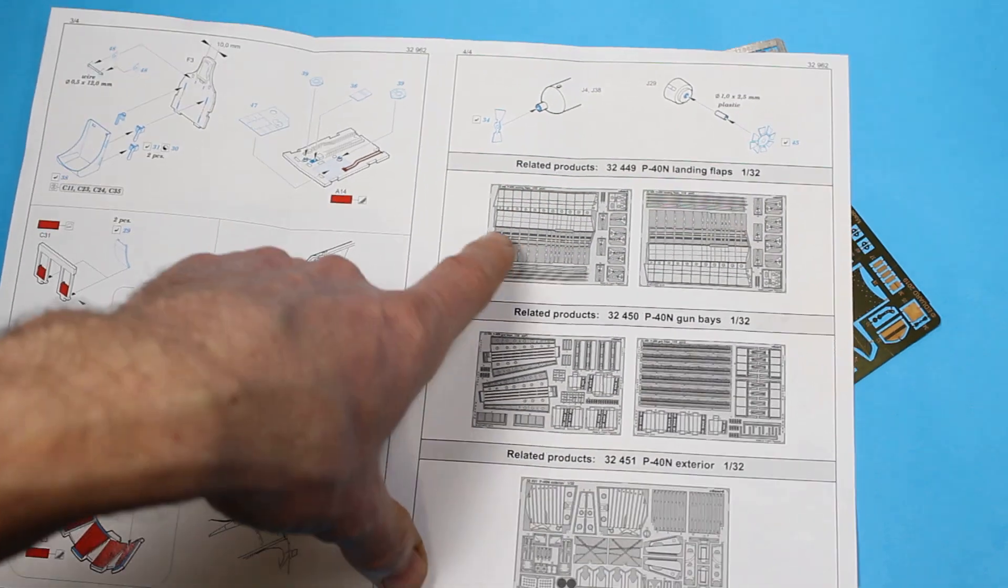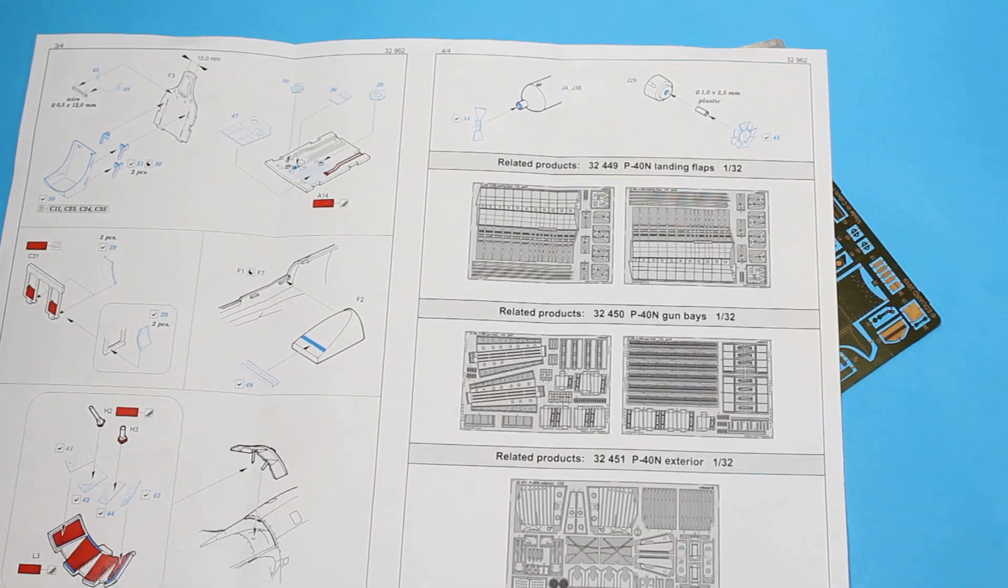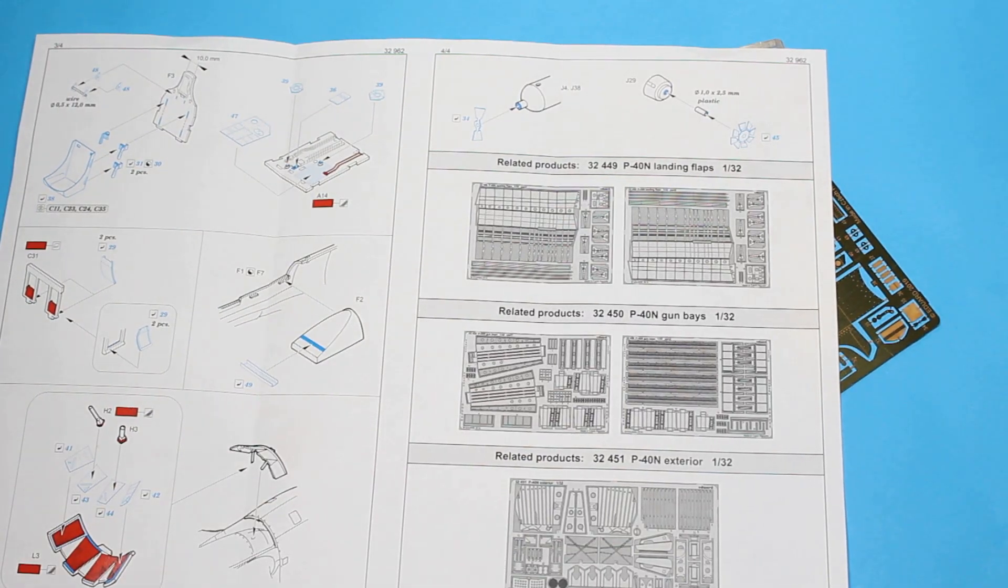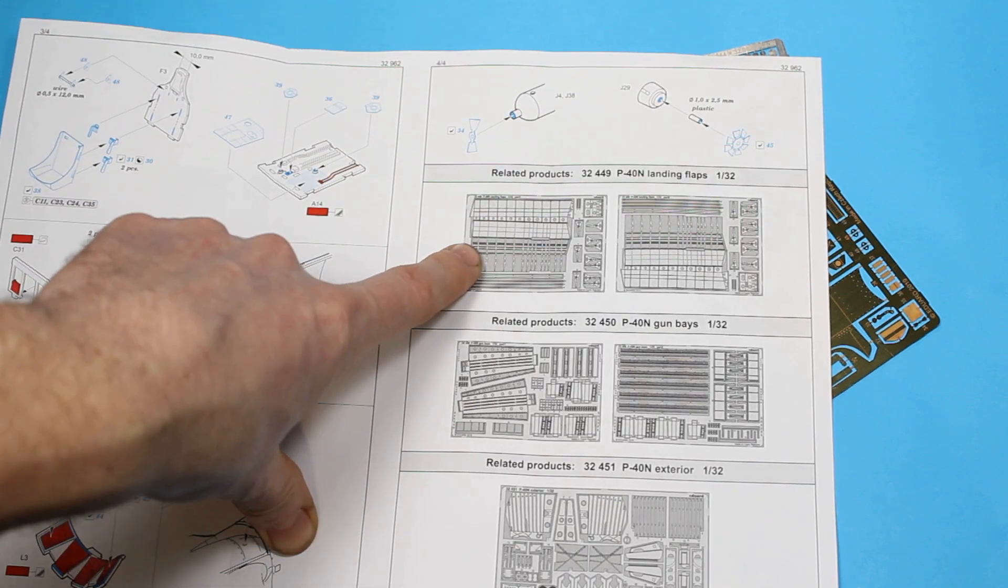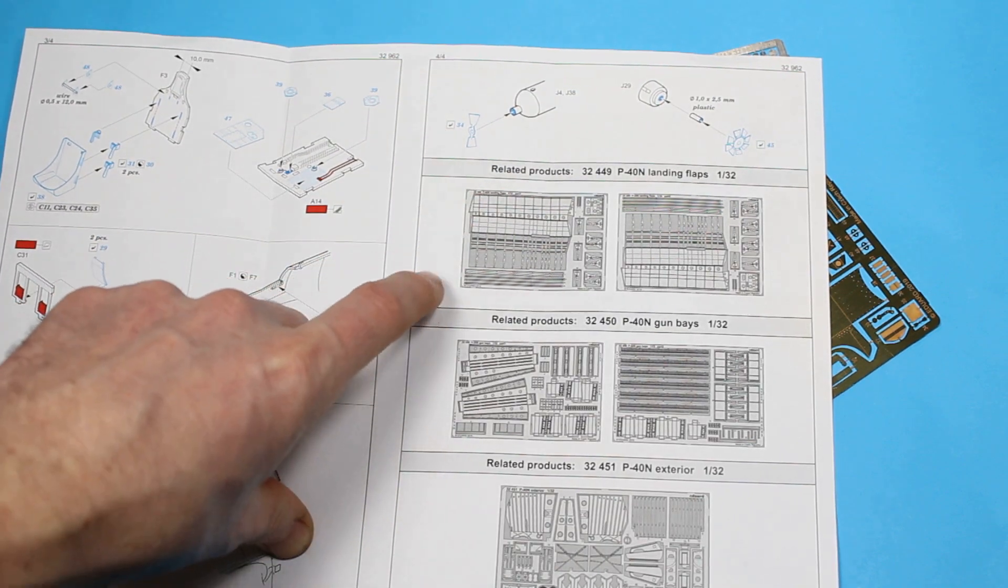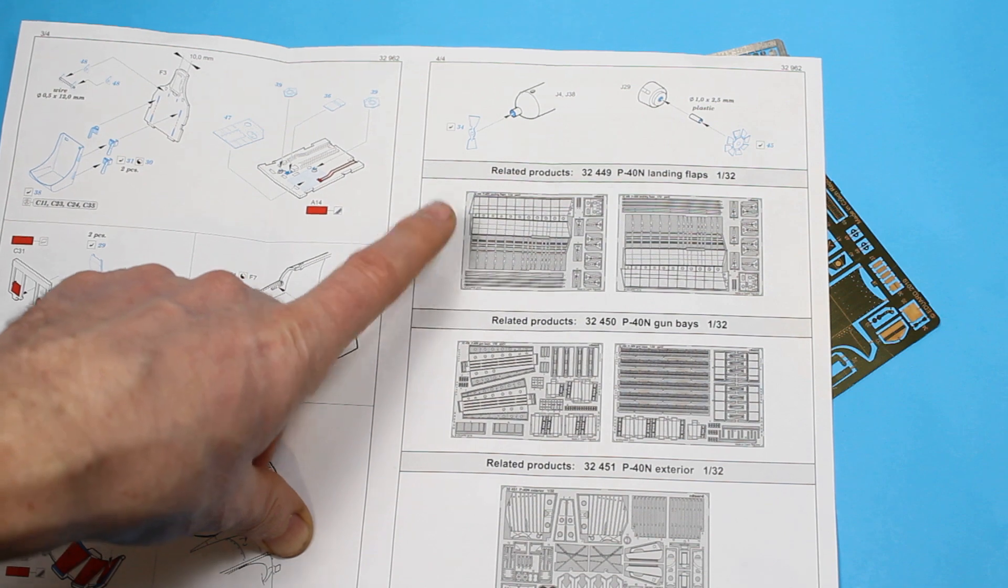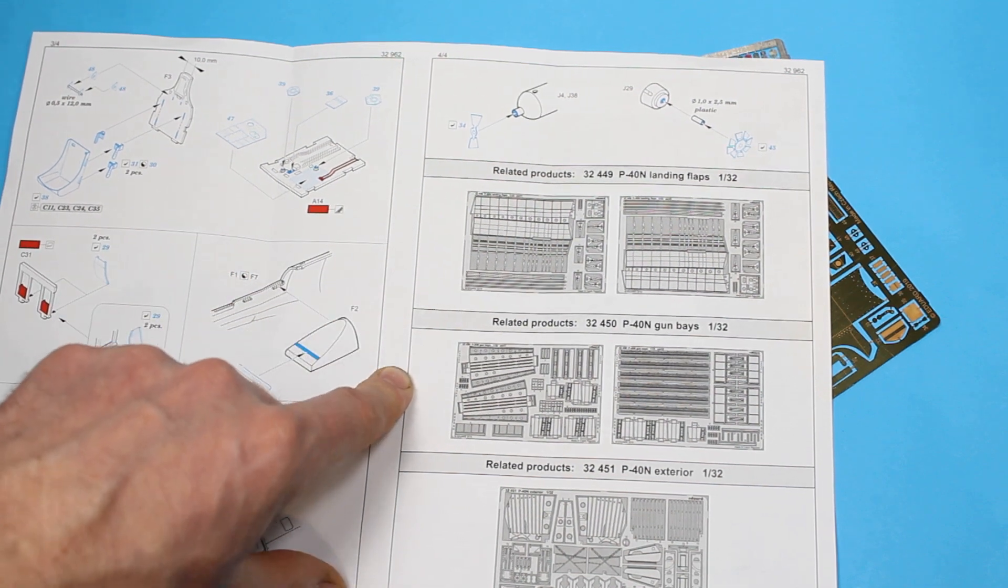There are other parts that Eduard have got available for this set that I don't personally think you really need. You've got full flap detail, which most of that's actually included in this kit, so if you wanted to open it up it's quite effective.